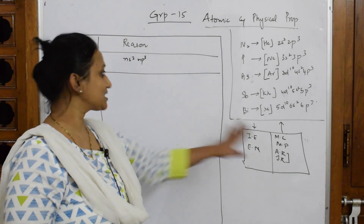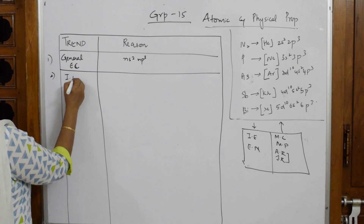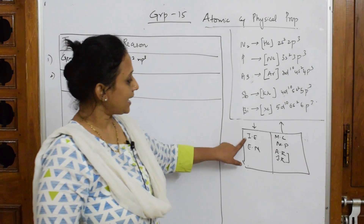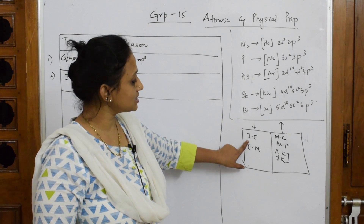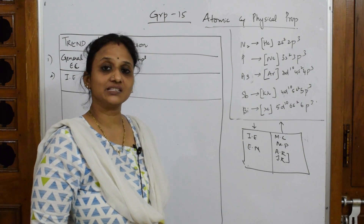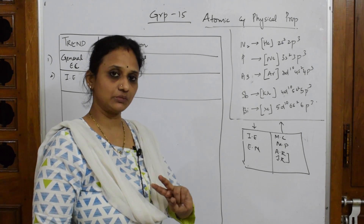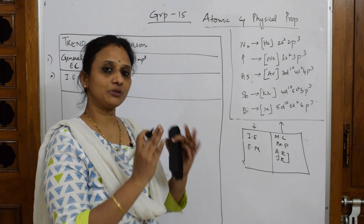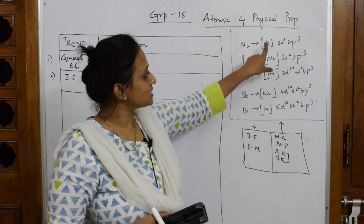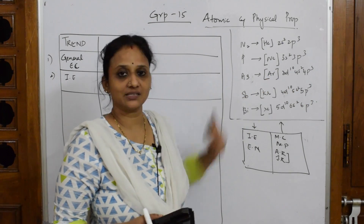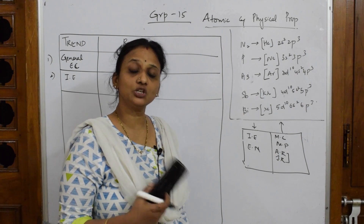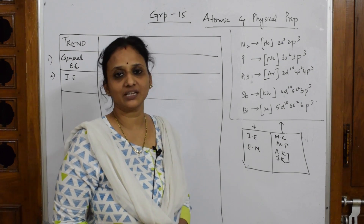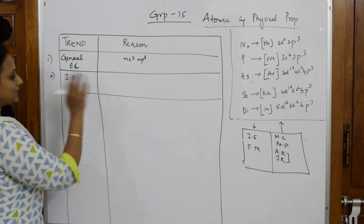Let's write the reason for ionization enthalpy. Ionization enthalpy is the amount of energy required to remove an electron from the outermost valence shell. As we go down the group, ionization enthalpy is decreasing. Why? Always relate ionization enthalpy with size: as atomic number increases, the number of shells increases, and the distance between the nucleus and the outermost shell also increases.